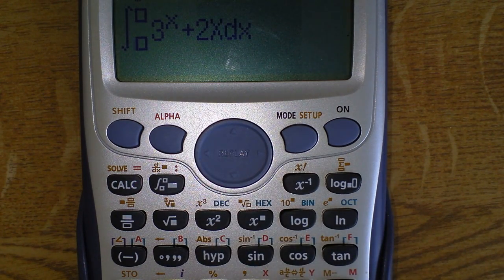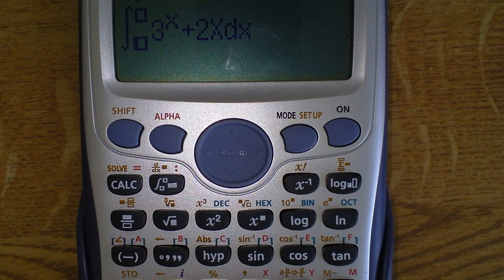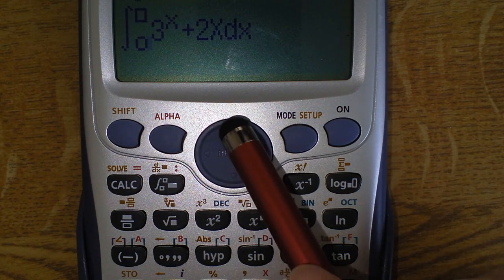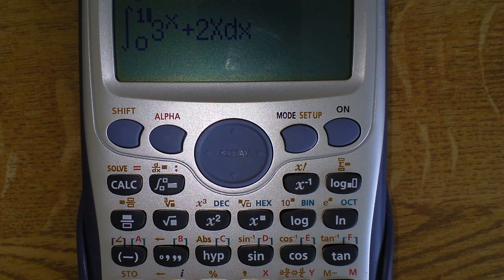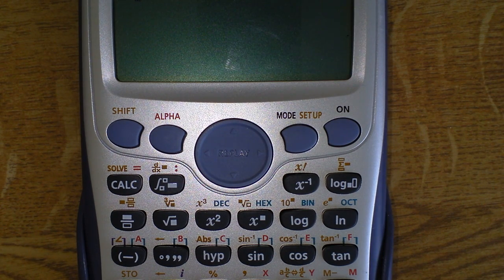That's the lower limit, and the lower limit in this case was zero. Press the up arrow to go to the upper limit, in this case it was one, and press equals. Just wait for a moment for it to calculate.